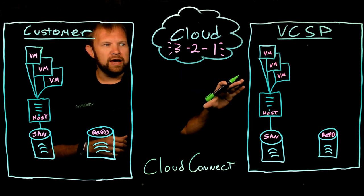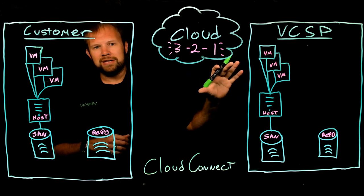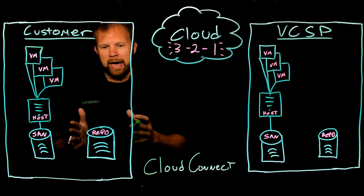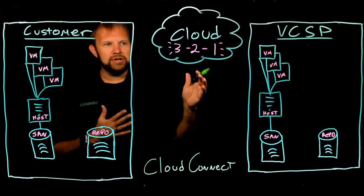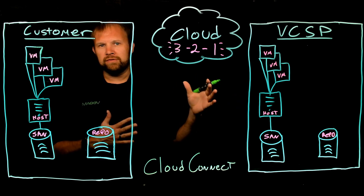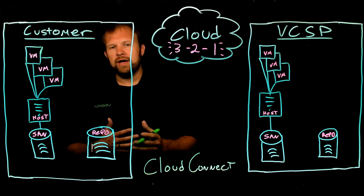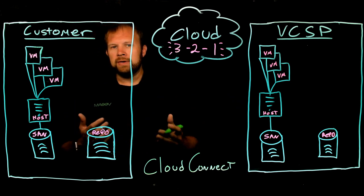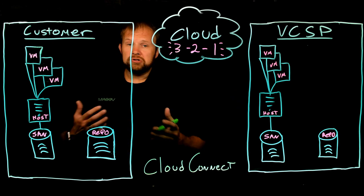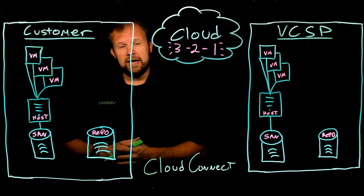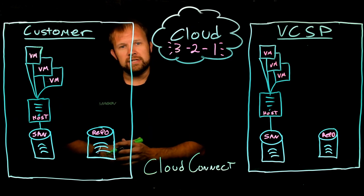On this side of the board is a similar environment, but depicting the actual service provider's data center. Historically, if you needed to back up to a remote location, you'd have to worry about networking — MPLS, VPN tunnels, whatever the case may be. With Veeam Cloud Connect, there are no networking complexities. We simply establish a connection with the service provider's data center over a single port via SSL.